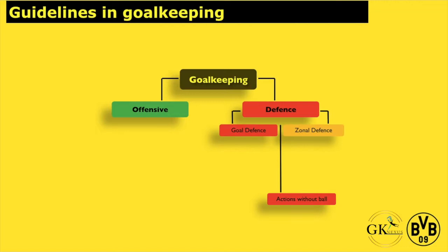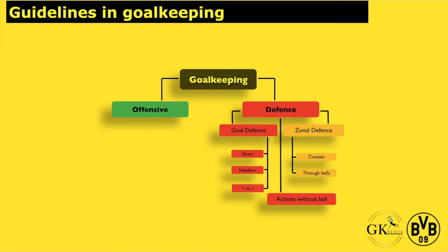In defense, we have goal defense and somal defense. These are actions without the ball where you have to react on something that is offered to you by the opponent. Goal defense is divided up in shots, in headers, and one versus one. And somal defense is, as an overall category, crosses and through balls.